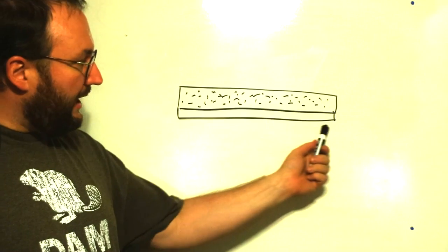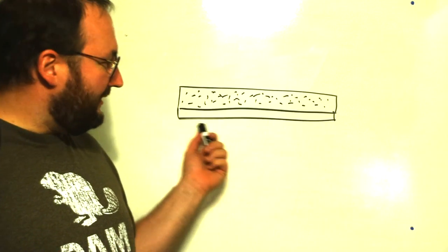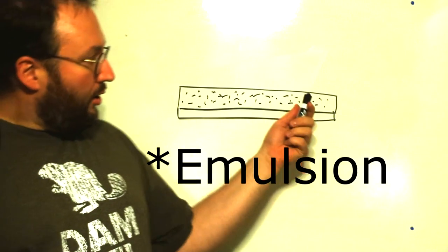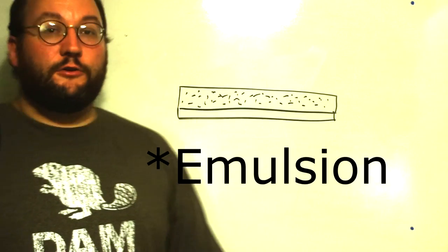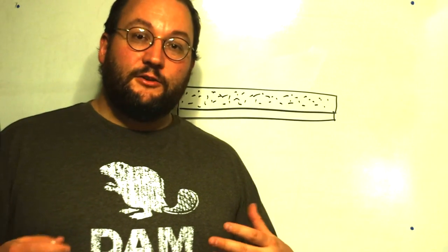But here would be a clear plastic, or generally clearish plastic base, and on that is a layer of gelatin with lots and lots and lots of little silver crystals in it. Now the silver crystals have been treated in such a way that they're light sensitive.